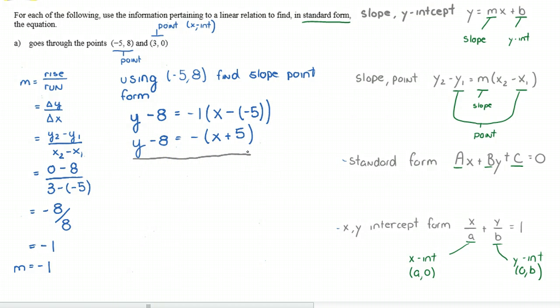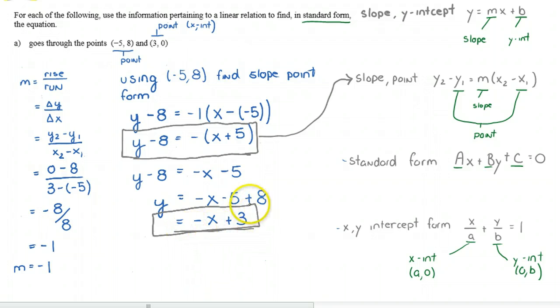Now, let's pretend that instead I wanted slope y-intercept form. All I would have to do is rearrange this equation to get y by itself. So let's do that. The first thing I'm going to do is expand these brackets. And the second thing I do is to get y by itself, I'll add 8 to both sides. And I'm going to get y equals negative x plus 3. So now, here, let's circle these. So that, we said, was slope point form. Here is slope y-intercept form.